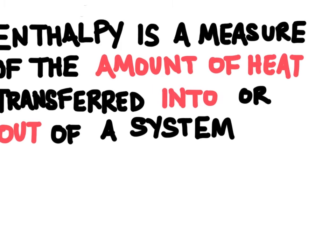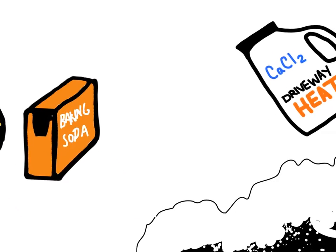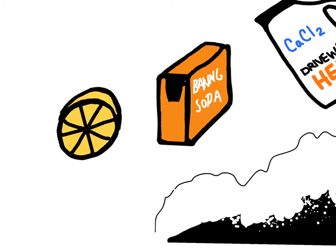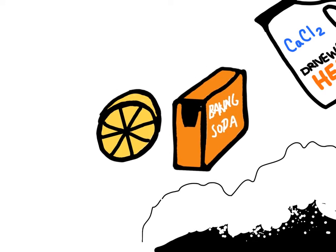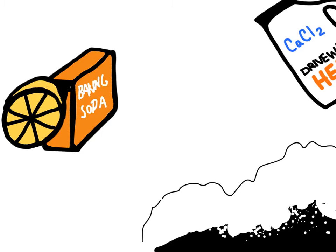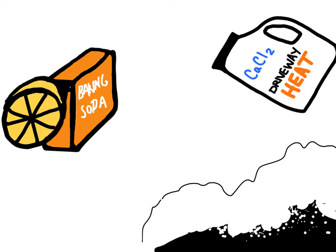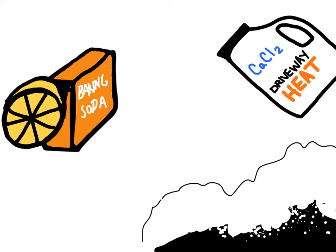It can help us determine what's going to help melt the ice on the road. If you were to apply something like baking soda and citric acid onto the snow, it would actually just make it colder. While if you were to take some calcium chloride — also known as driveway heat — and dump that onto the snow, it's going to heat up and melt the snow really easily. So citric acid and baking soda causes heat to go into the system, while calcium chloride and water makes heat go out of the system, transferring that heat into the snow to melt it.